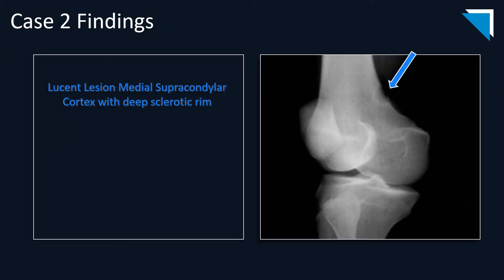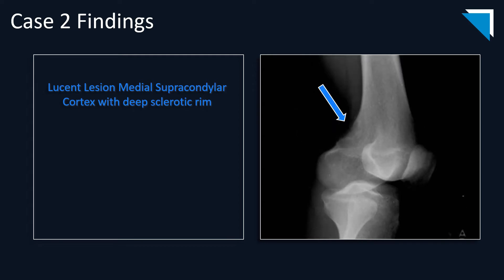The second case is a patient who presents with medial knee pain. On the radiograph, there is a lucent lesion within the medial supracondylar cortex with a deep sclerotic rim, which is again confirmed on an oblique radiograph view.